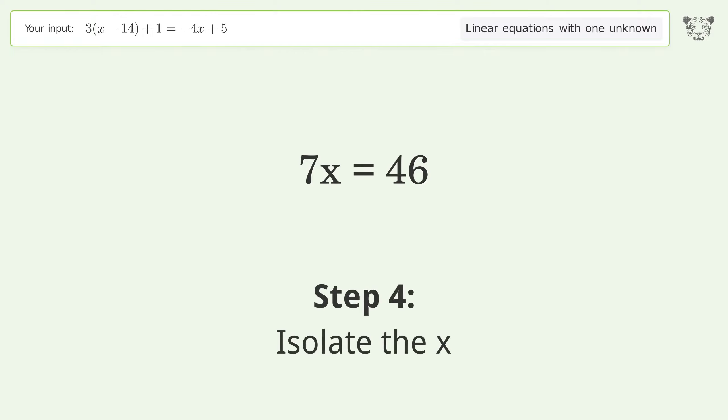Isolate the x. Divide both sides by 7. Simplify the fraction. And so the final result is x equals 46 over 7.